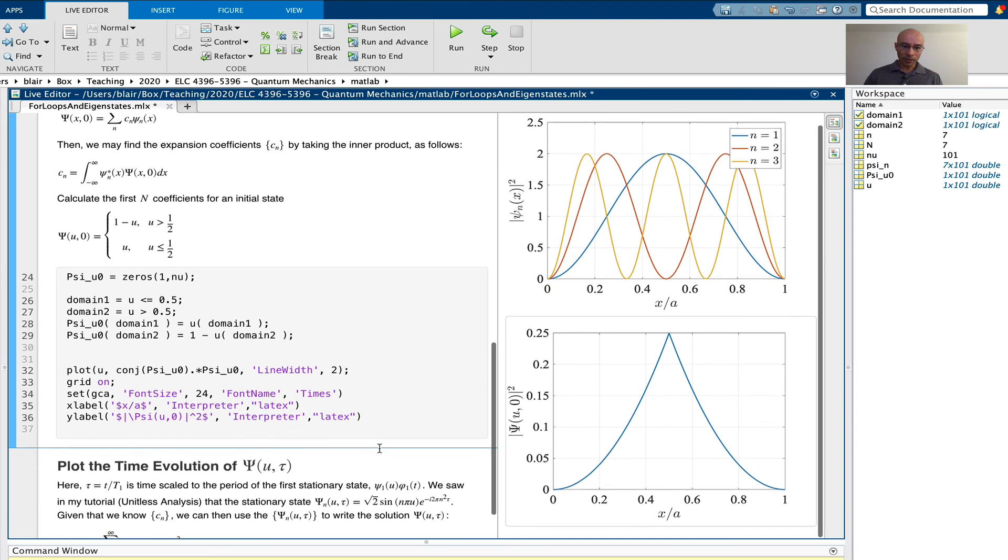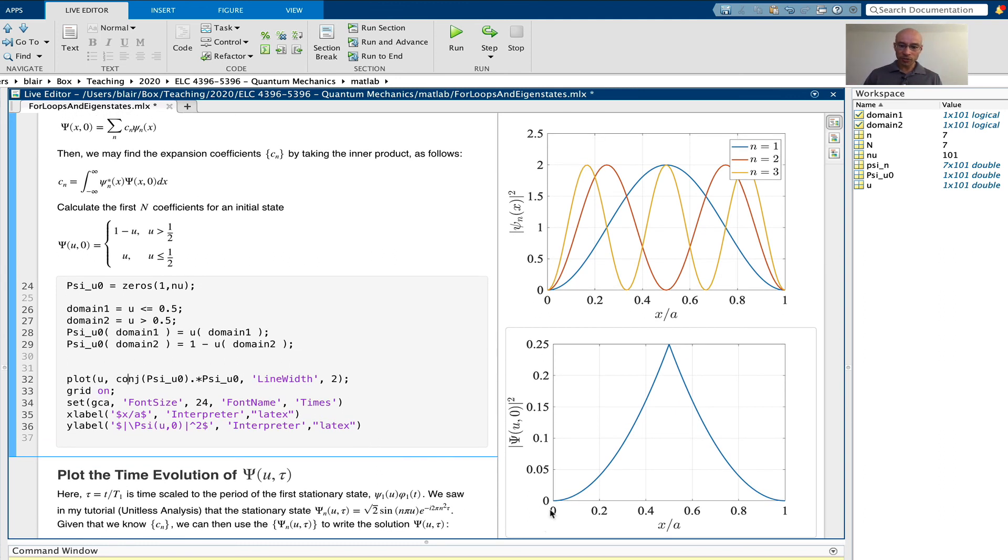Okay, so in this video, I showed you how to use conditional subscripting to address certain domains in my piecewise function and to calculate and represent those parts of the function. In the next video, we will calculate the expansion coefficients for psi 0.